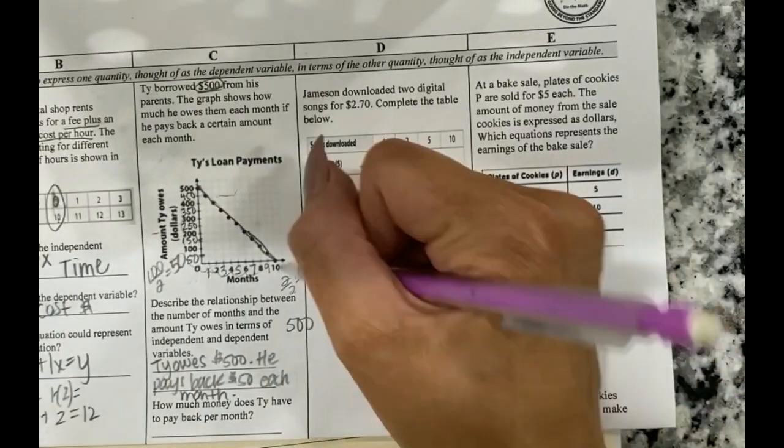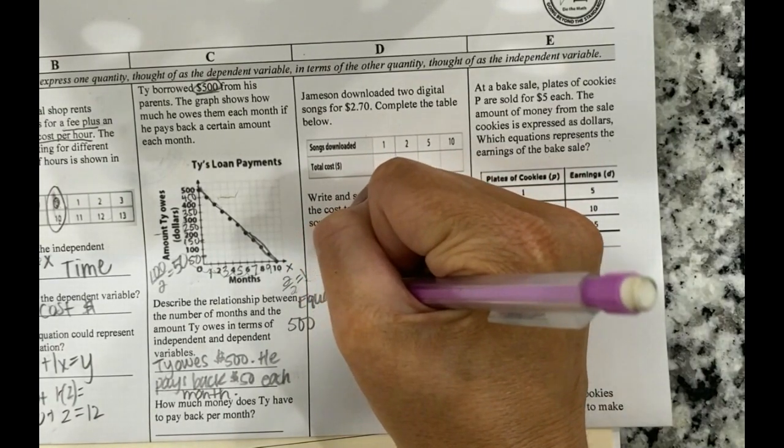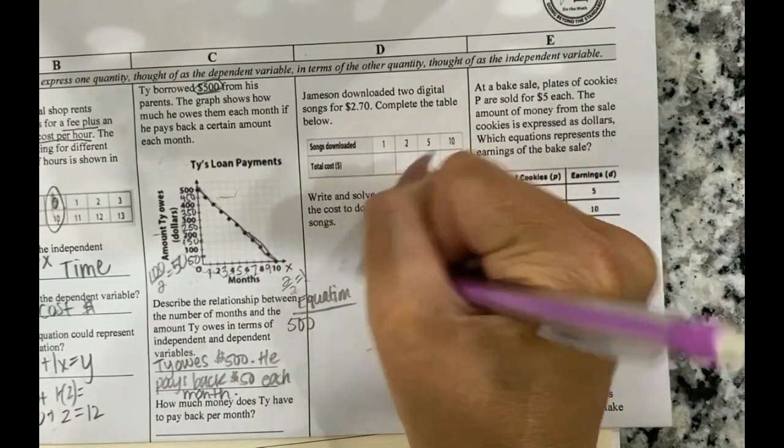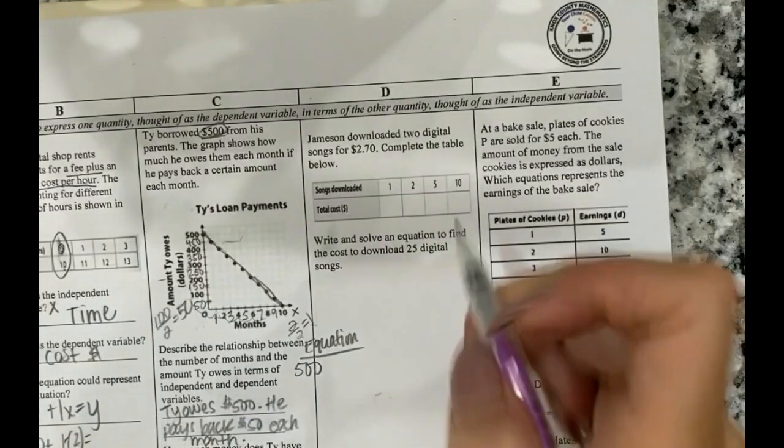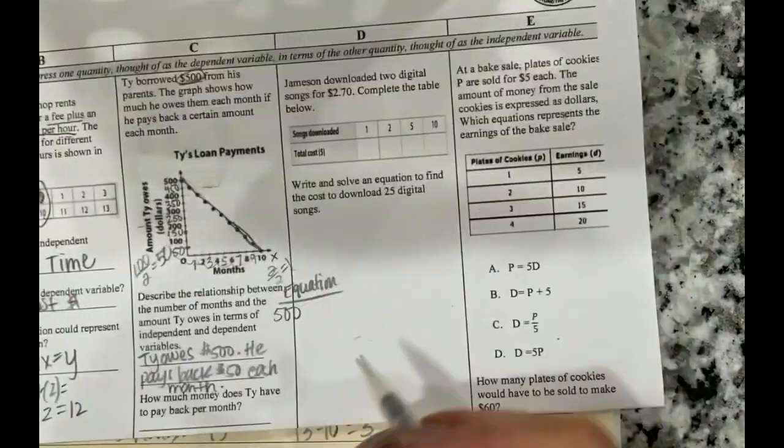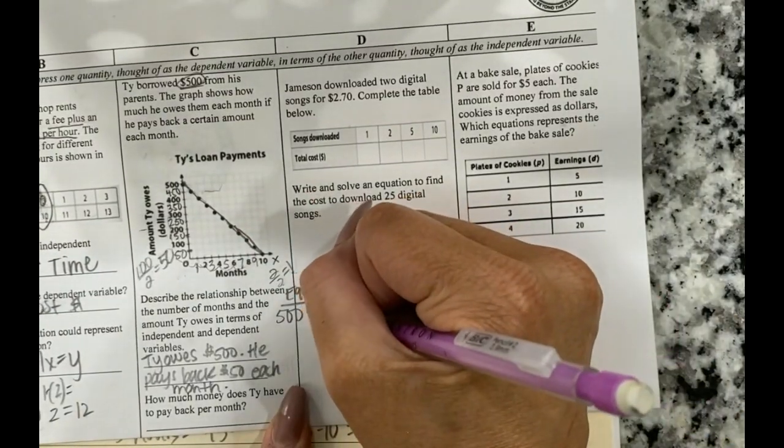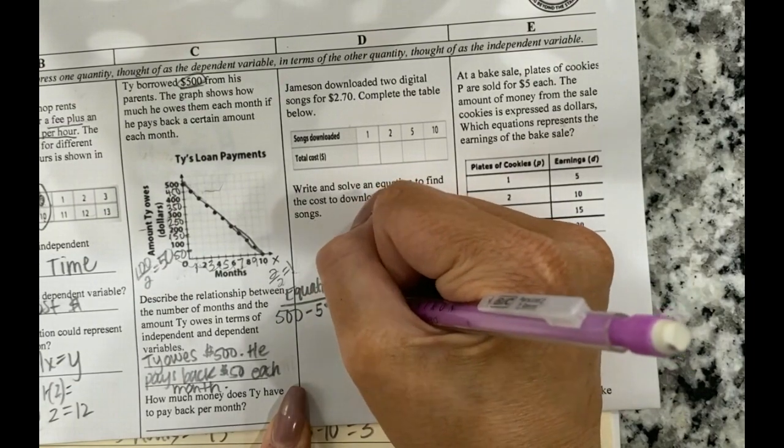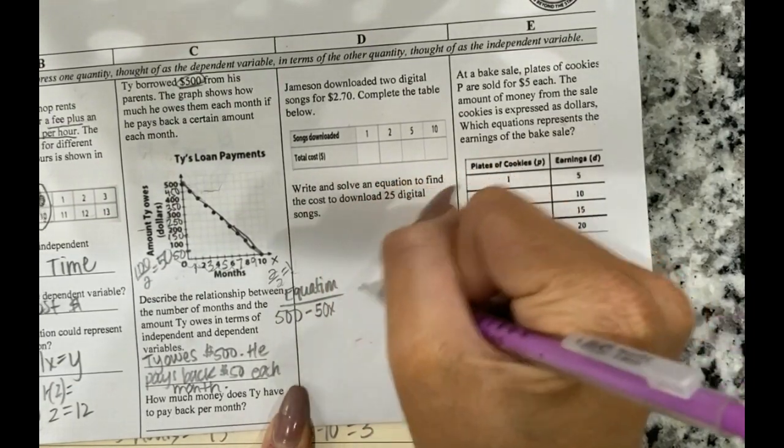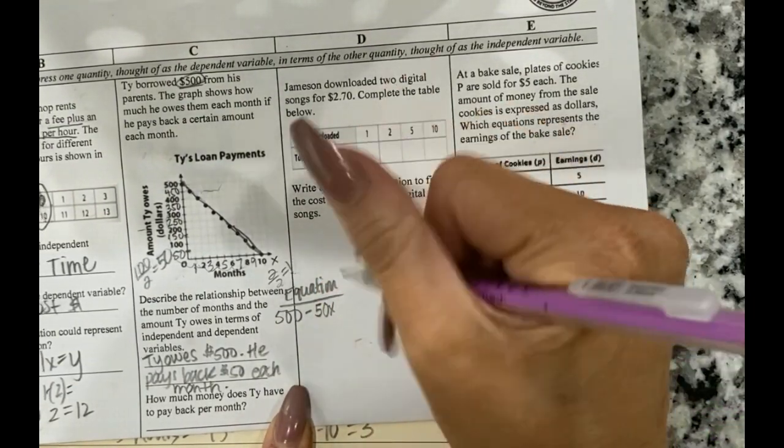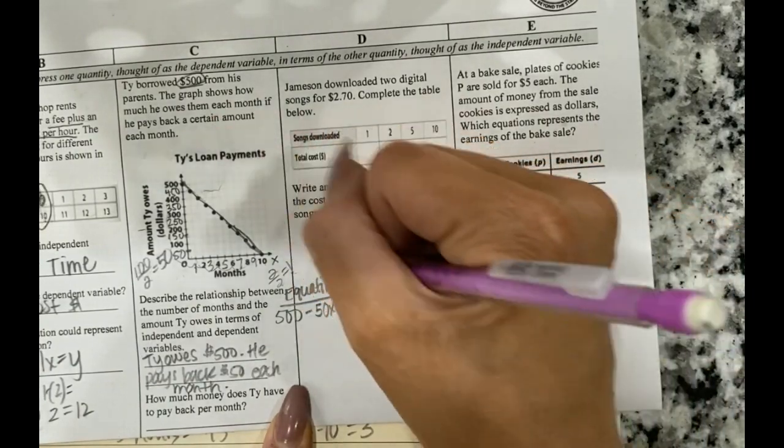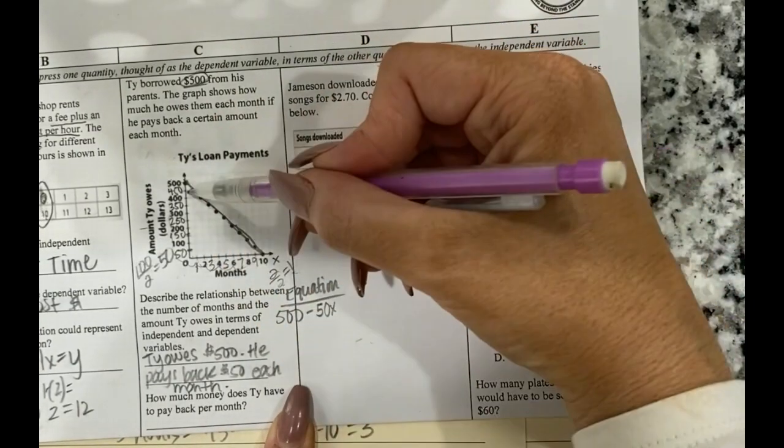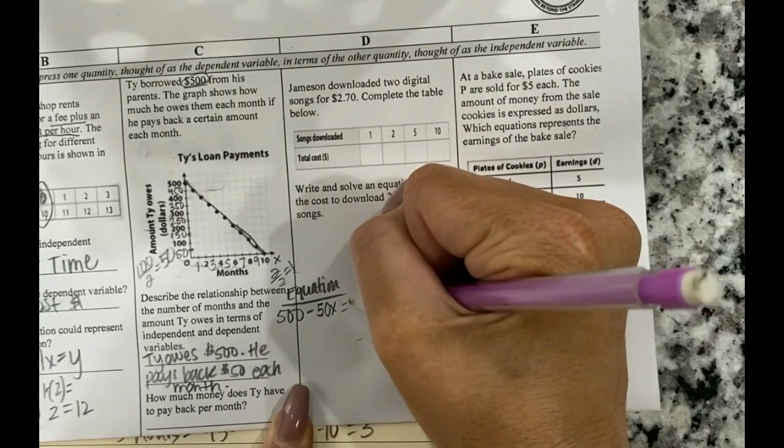Okay. So what I can say about that, that means that Ty owes $500. He pays back 50 each month. Okay. So now let's think about what that equation looks like. Kind of moving into this area over here in D section.